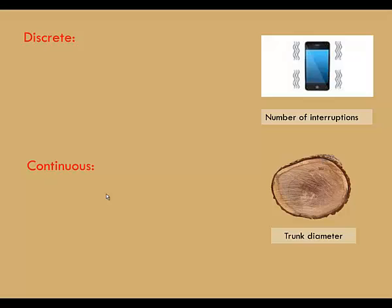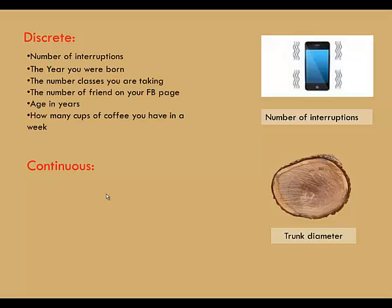Examples of discrete quantitative variables would be the number of interruptions in class, the year you were born, the number of classes you were taking, the number of friends on your Facebook page, your age in years, and how many cups of coffee you have in a week.